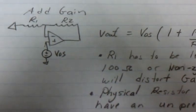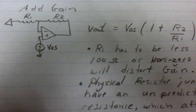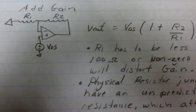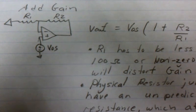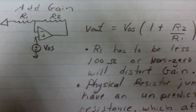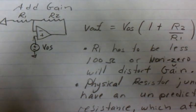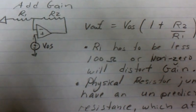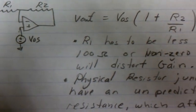We could add gain, and since V offset comes in on the positive terminal, it is just a non-inverting amplifier, and we could set R2 and R1 to get the gain we desire.